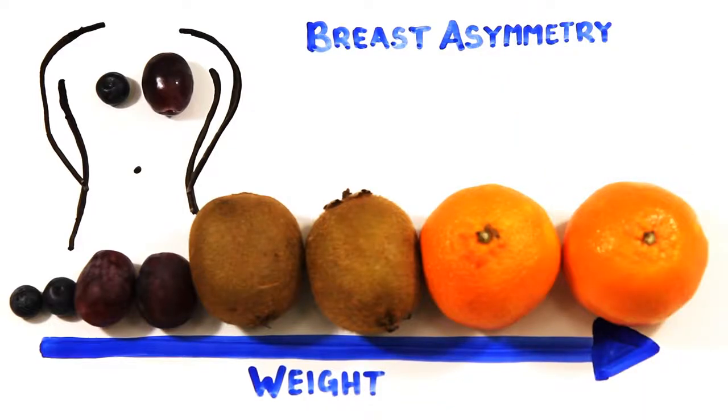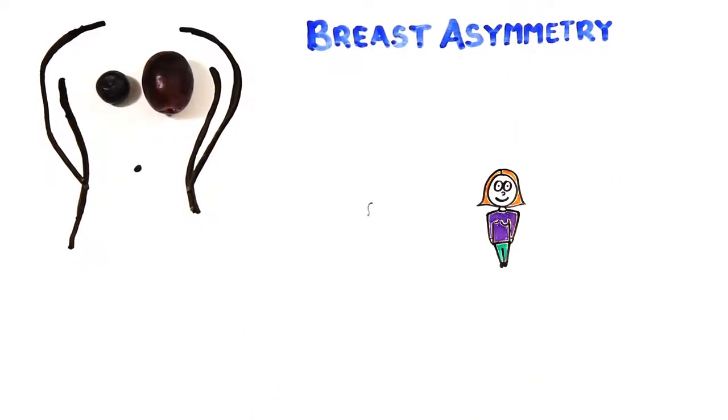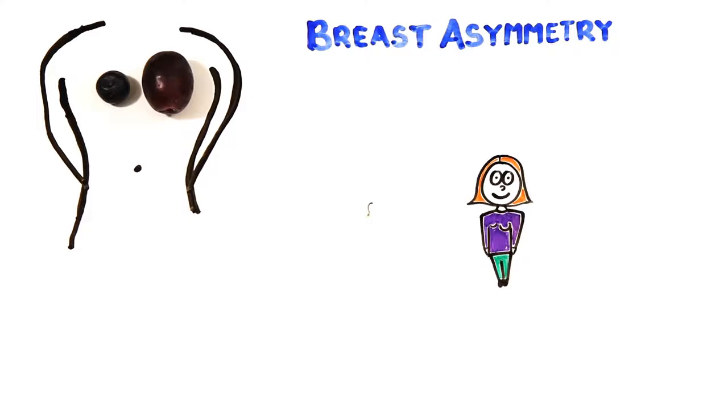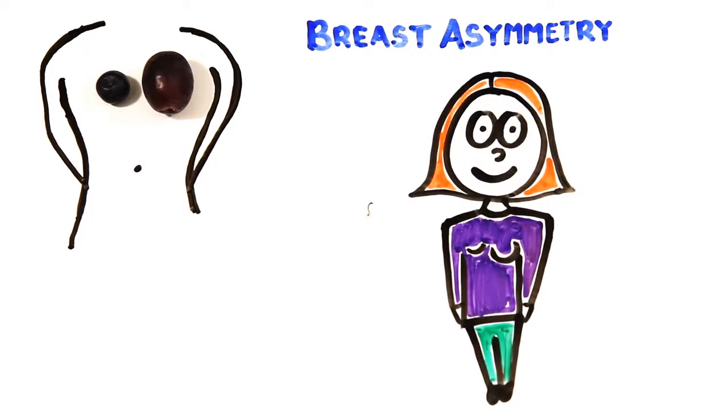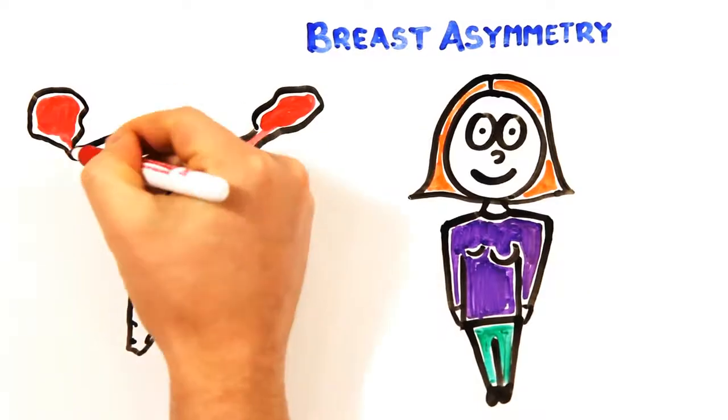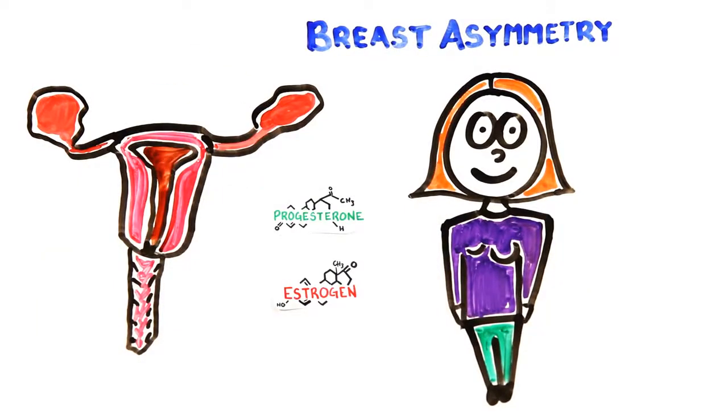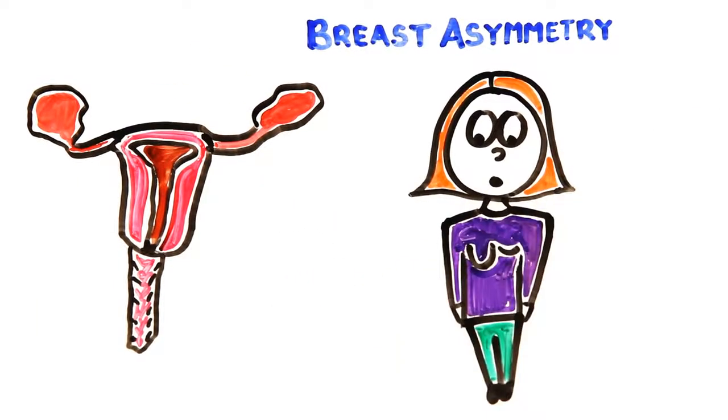This asymmetry is normal, and though scientists aren't entirely clear why, a possible contributor is the hormonal changes that happen during puberty. On top of this, the size of your breasts vary from week to week. The production of estrogen and progesterone throughout the menstrual cycle changes the size of your breasts.